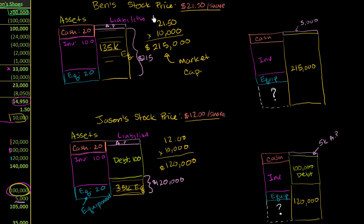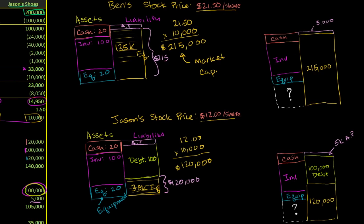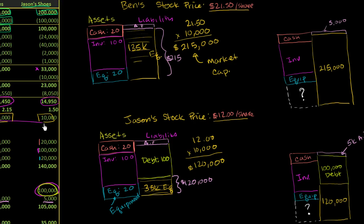In the last video, we saw that if Ben's shoe company's stock price is trading at $21.50 per share, and if Ben's shoe company has 10,000 shares, and we saw that over here on the left both of the shoe companies had 10,000 shares, then the market is essentially valuing the equity of Ben's shoe company at $215,000.